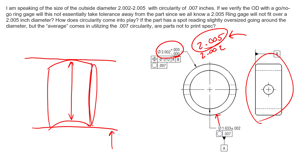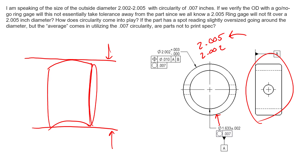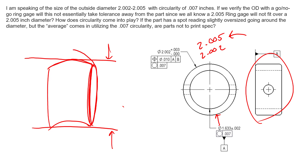In a go/no-go gauge such as a ring gauge, you have a theoretically perfect sized boundary. You would have a ring gauge that measures at 2.005 to check Rule Number One of this feature of size. As long as that passes through, we've checked one element of size. You're absolutely right — if the diameter from here to here measures 2.005 and there's form error, that form error is going to deviate inside of this envelope, thus failing that part.